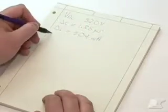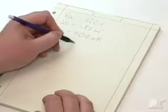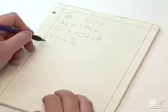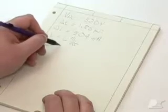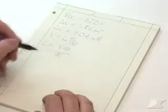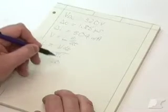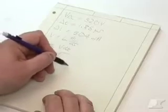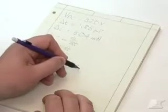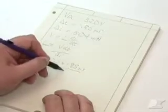Now using V equals L di by dt and if we rearrange that we end up with L equals V dt by di. We measured the voltage, it was 320 volts. Our dt was 1.85 microseconds and our di was 504 milliamps.